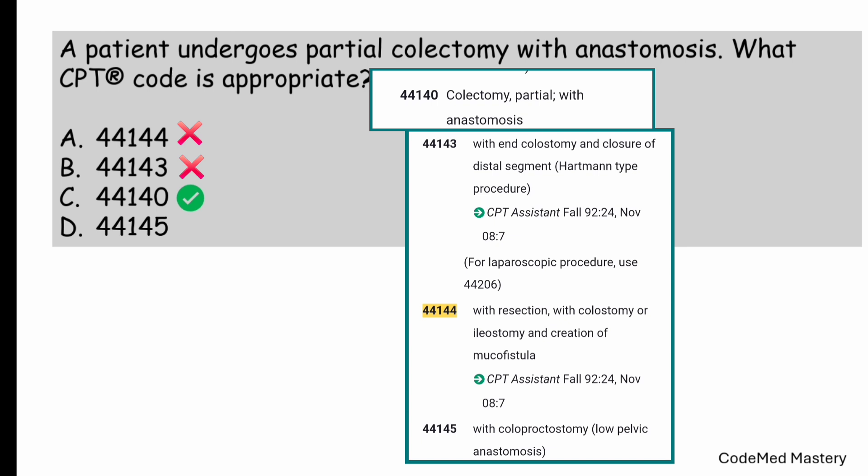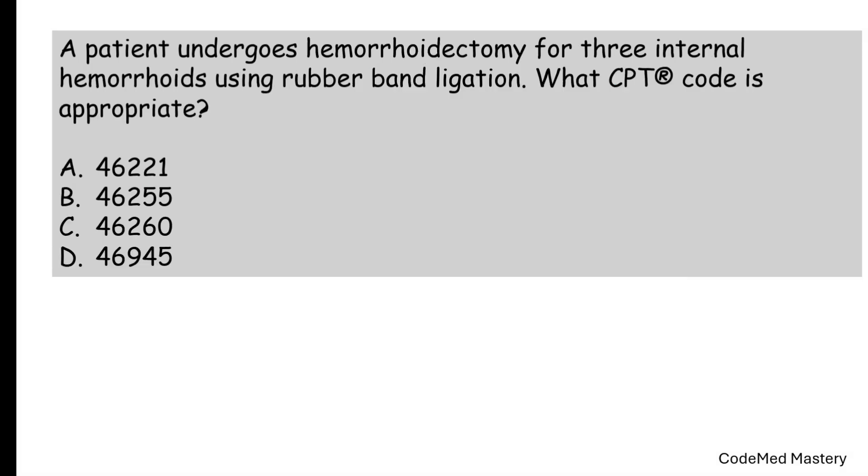Option D, 44145, is for colectomy partial with coloproctostomy, low pelvic anastomosis — that is also not given in the question. The appropriate code is 44140. Next question.